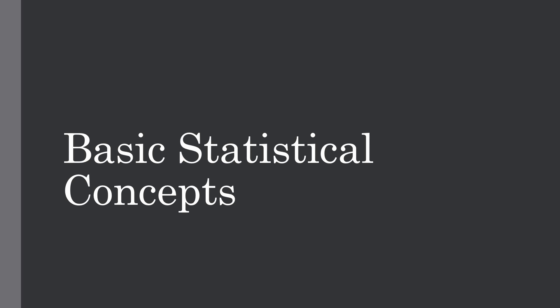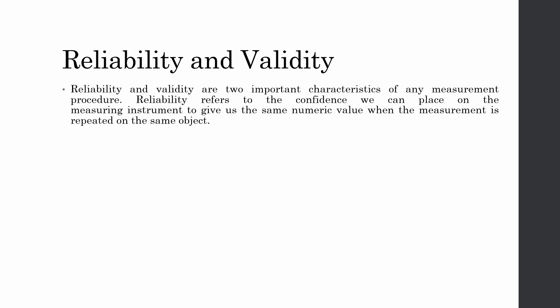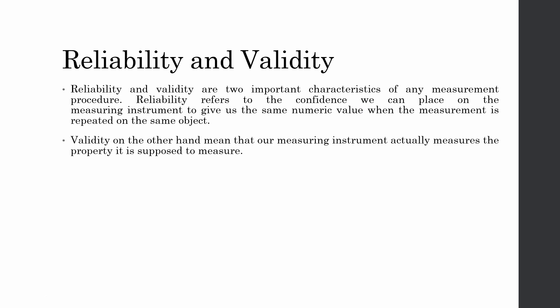In this session we are going to talk about basic statistical concepts. The first one is reliability and validity. Reliability and validity are two important characteristics of any measurement procedure. When we are using a questionnaire to measure different concepts, behaviors, or attitudes, we have to make sure that our measures are reliable and valid. Reliability refers to the confidence that we can place on the measuring instrument to give us consistent results — when the same measuring instrument is used again on the same subjects under similar conditions, it will give us similar results.